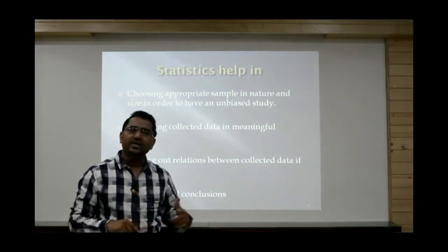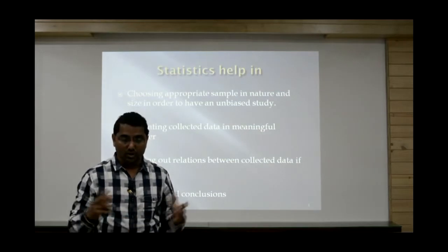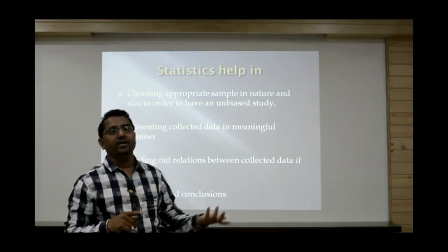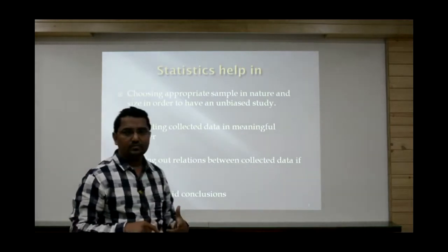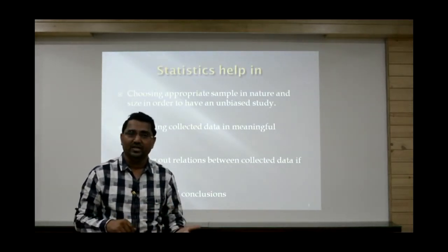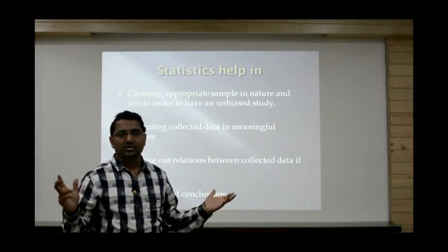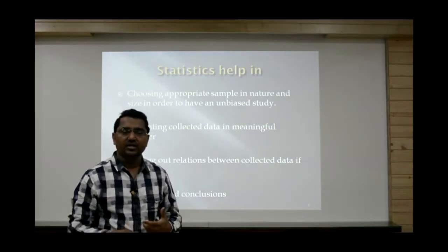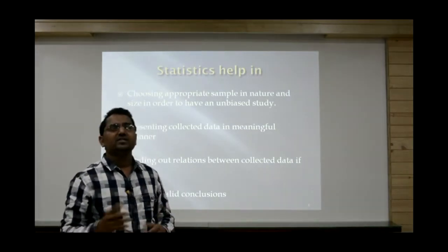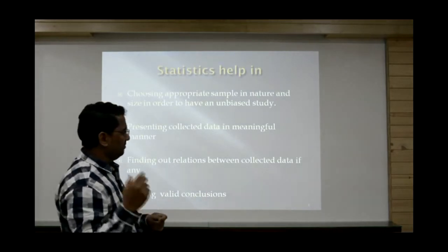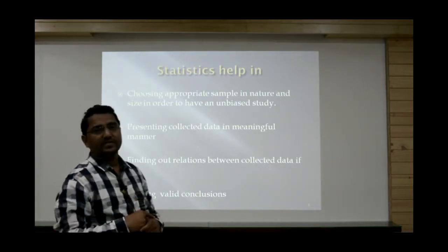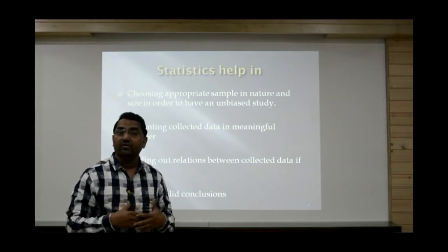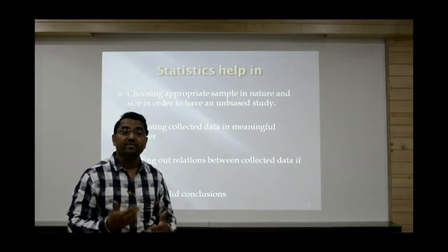Many times, measures of central tendency are not sufficient to compare groups. In that case, we go for the next measure, called measures of dispersion — such as standard deviation, coefficient of variation, and quartile deviation. So this is what we call descriptive statistics, where we describe the data.